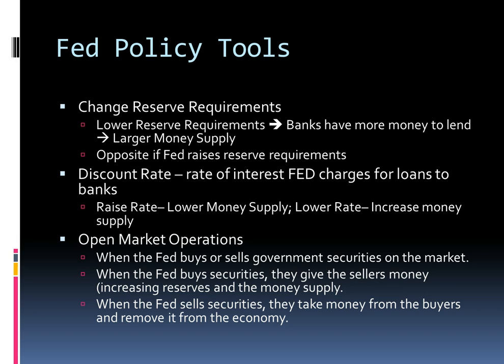Lastly, the Fed can conduct open market operations, which is the most commonly used tool to change the money supply. The Fed can buy or sell government securities on the market to increase or decrease the money supply. If the Fed buys government securities, it puts money into the economy, giving banks more to lend and increasing the money supply. If the Fed sells government securities, it takes money out of the economy, decreasing the money supply.